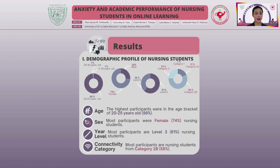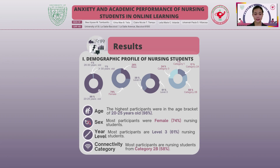In the demographic profile of nursing students, out of 208 students, the highest participants were in the age bracket of 20 to 25 years old with 98%, and the least participants were ages 26 to 30 years and 31 years old and above, with a combined percentage of 2%. Most participants were female nursing students with 74% and male students with 26%. Level 3 nursing students comprised 61% and level 4 with 39%. Category 2B had the highest participants rate of 58% and category 1 the lowest at 1%.